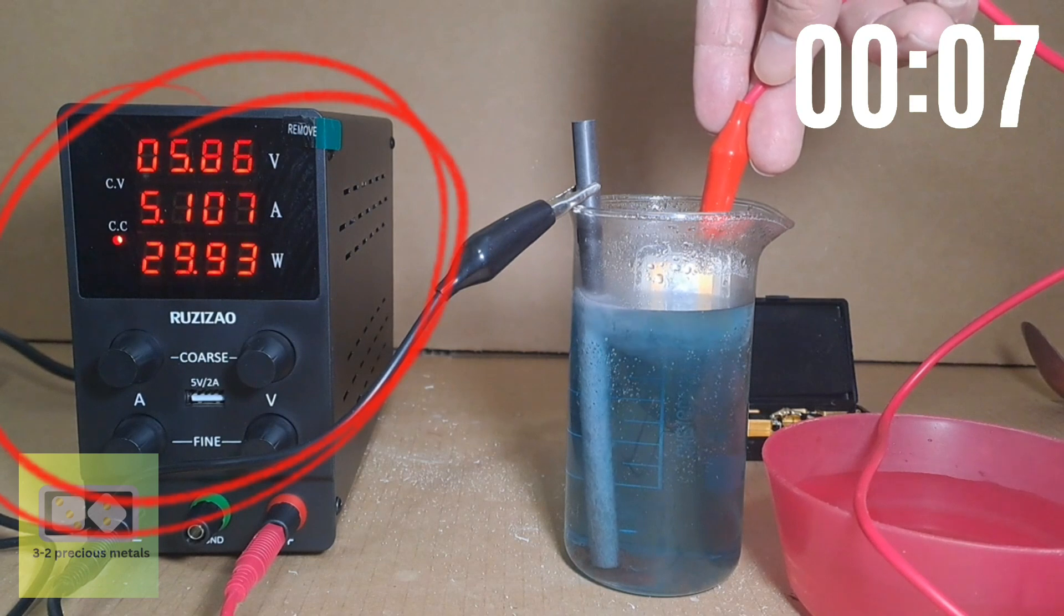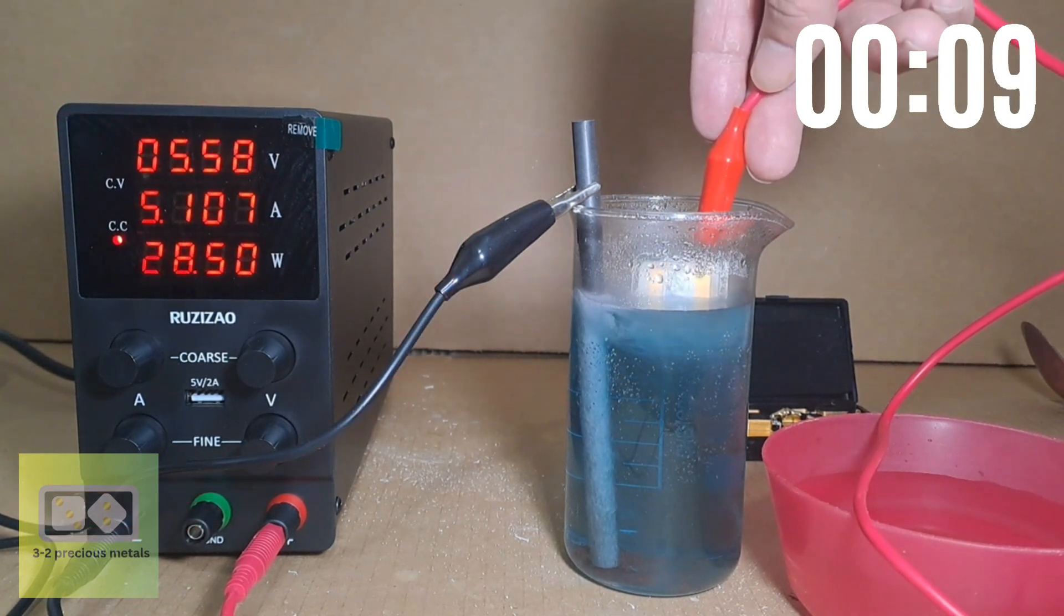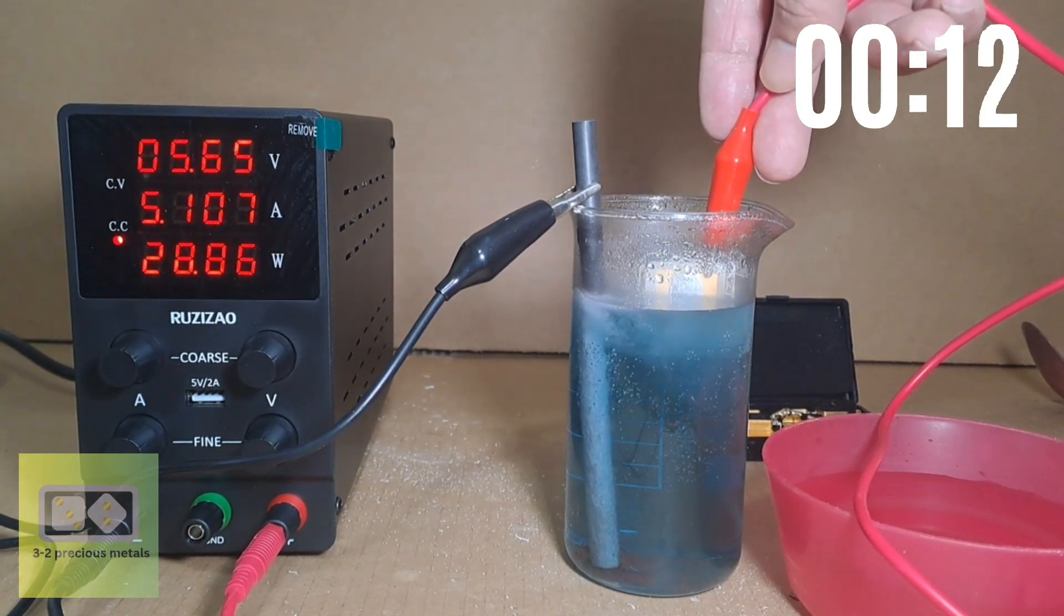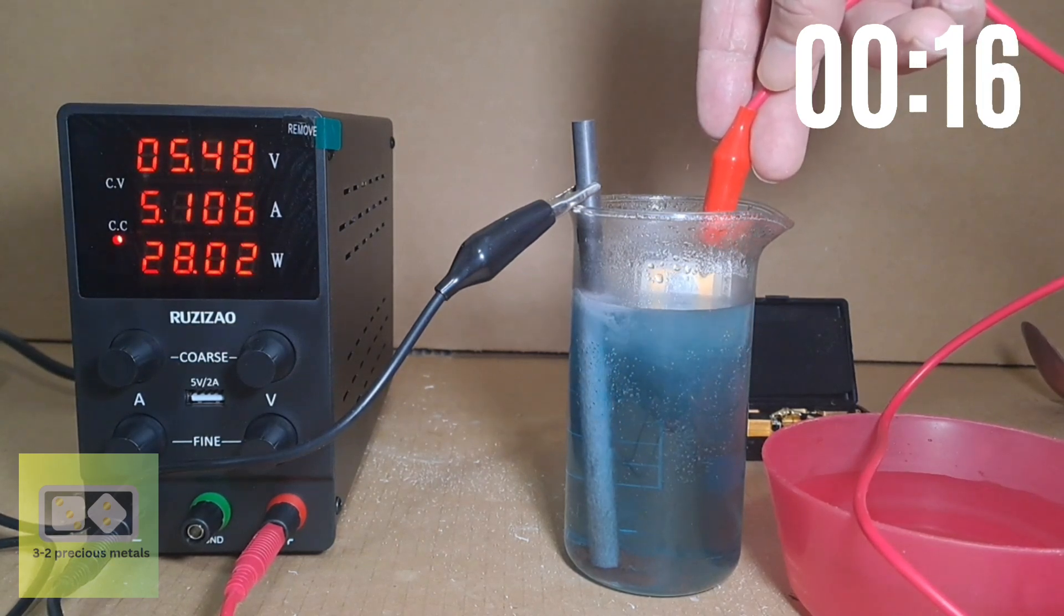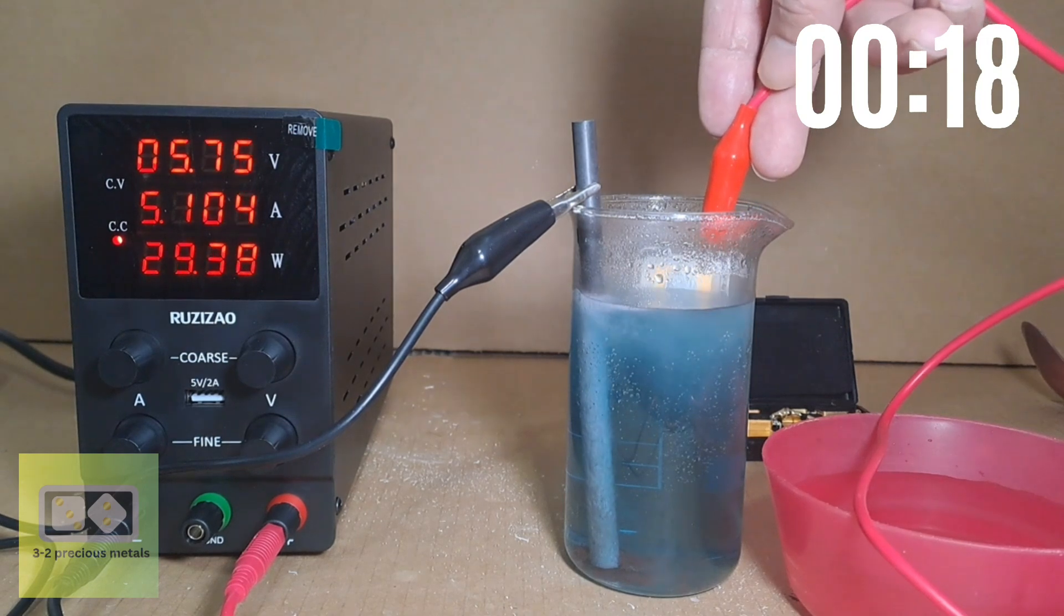On the left we have a DC power supply. It's a regular power supply with adjustable voltage and amperage. For this experiment I have it set at just over 10 volts and 5 amps.